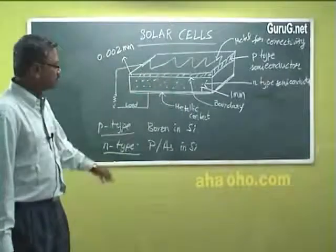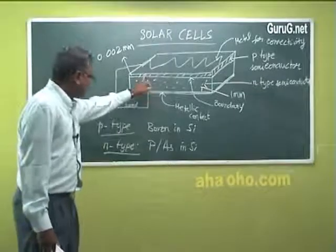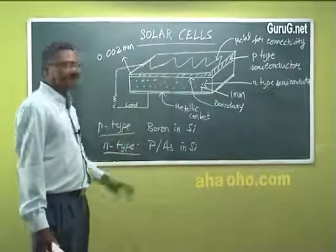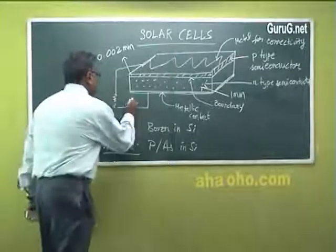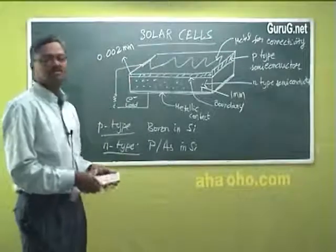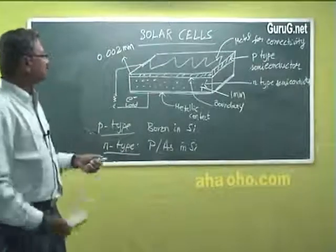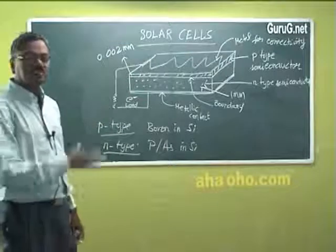This current can be tapped by attaching an external load. When N type conductor and P type conductors are there, electric current moves from N type conductor to P type conductor. This is the principle behind solar cell. When you have a number of solar cells you can get solar panels.